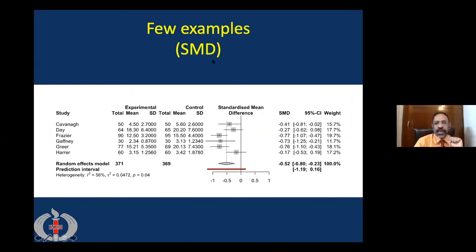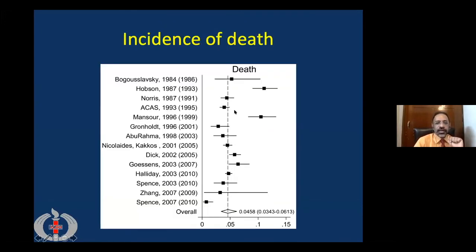Here is a forest plot showing the standardized mean difference, where the line of null effect lies at zero. Most studies showed that the mean difference was on the negative side, so the overall was also on the negative side. Here is a different kind of study looking at incidence of death among various studies, where the line of null effect is also zero. Since no study can have death in the negative, the graph starts from zero and goes to the right. The overall frequency of death in this study was about 5% with its confidence interval.